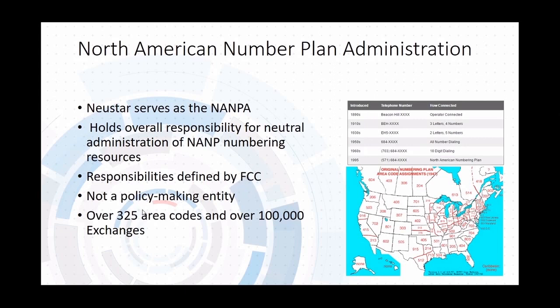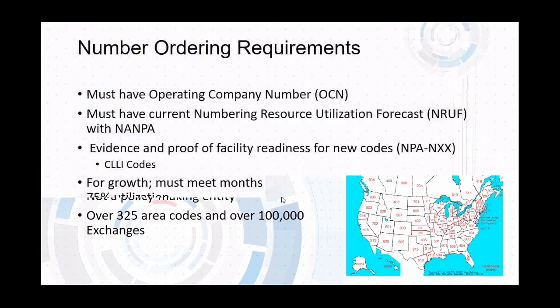NewStar is not a policy-making entity. The FCC takes guidelines from different industry working groups composed of representatives from different carriers, and they come up with definitions and guidelines for processes that NewStar needs to follow. Today we have over 325 area codes or NPAs and over 100,000 exchanges.